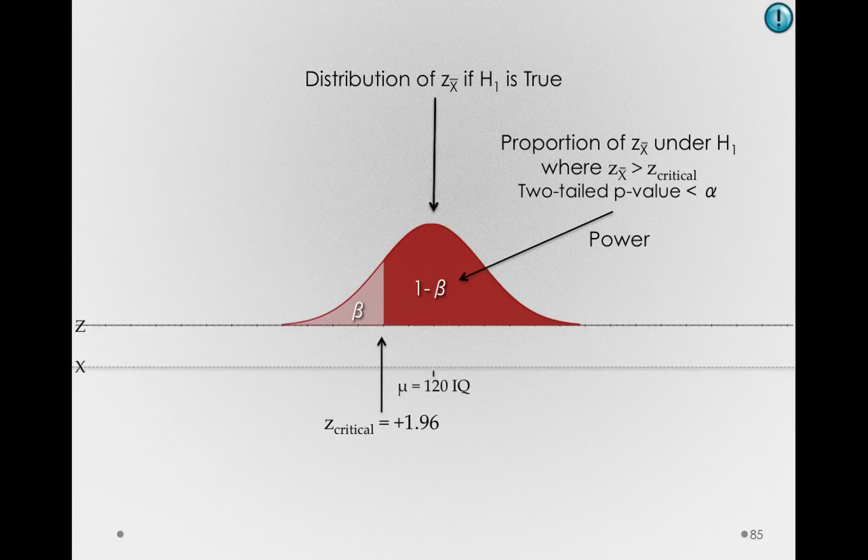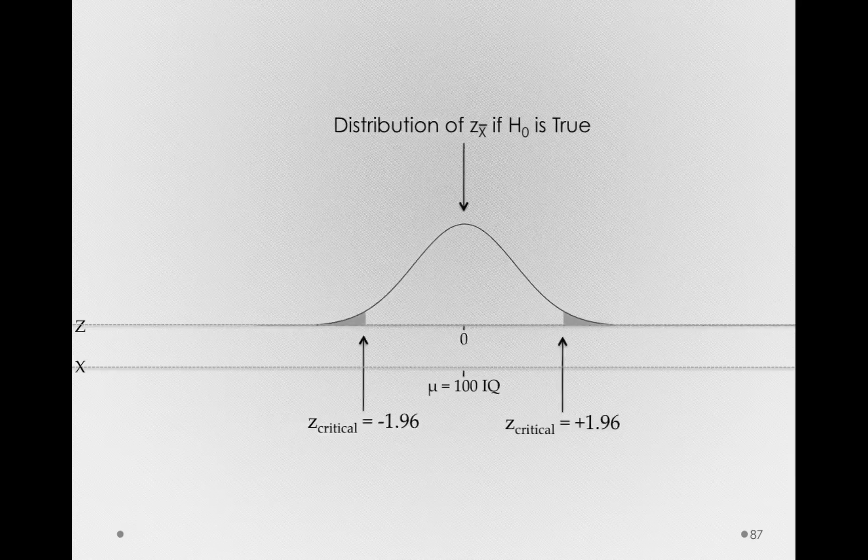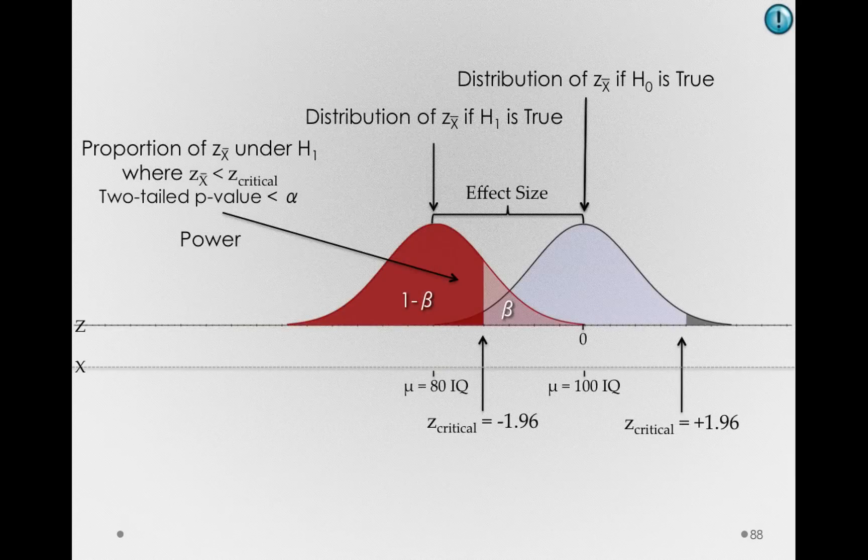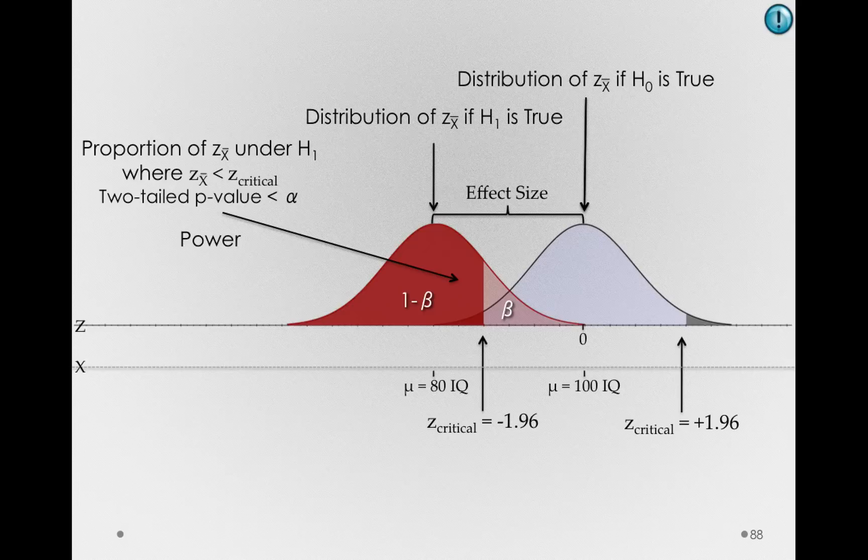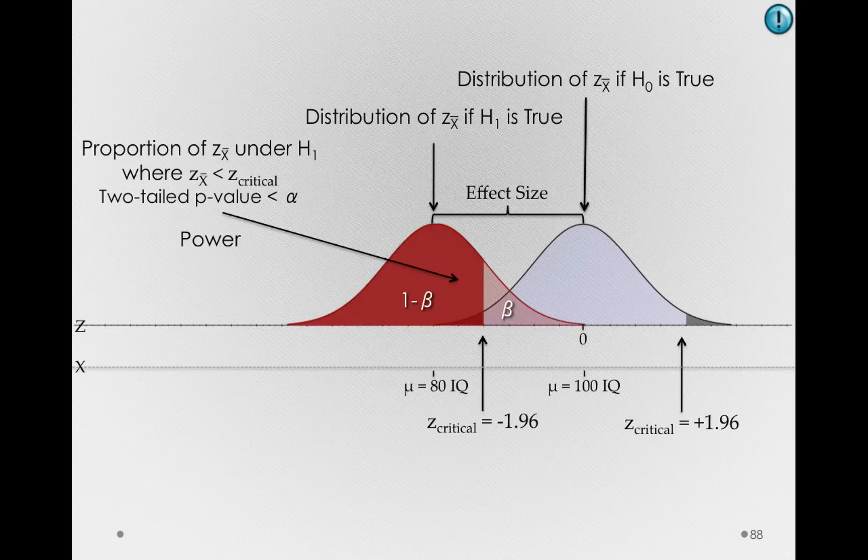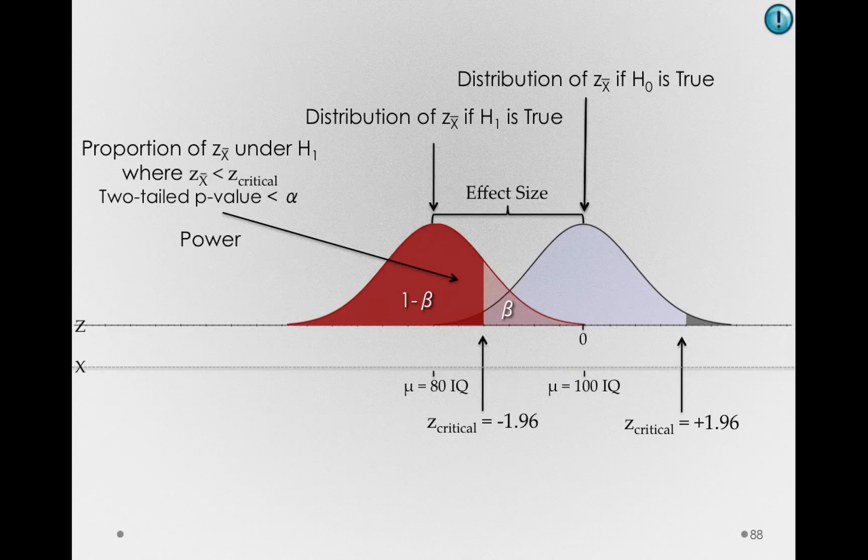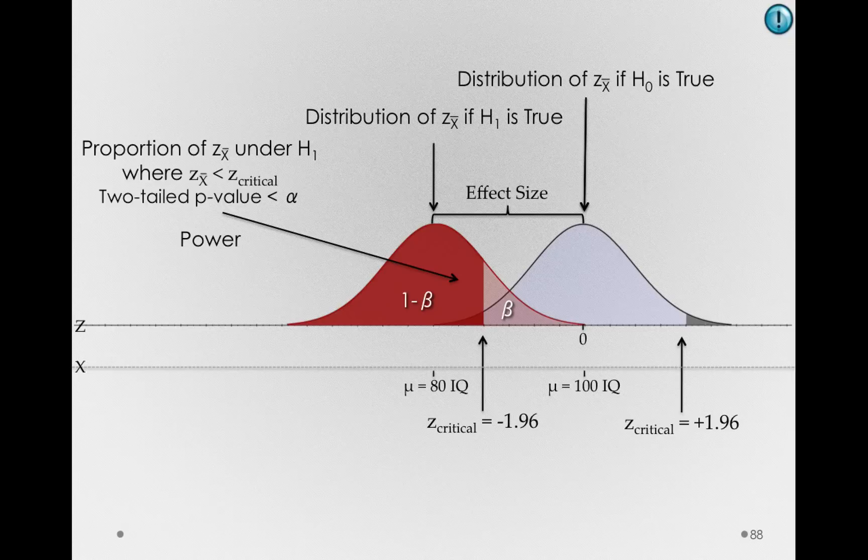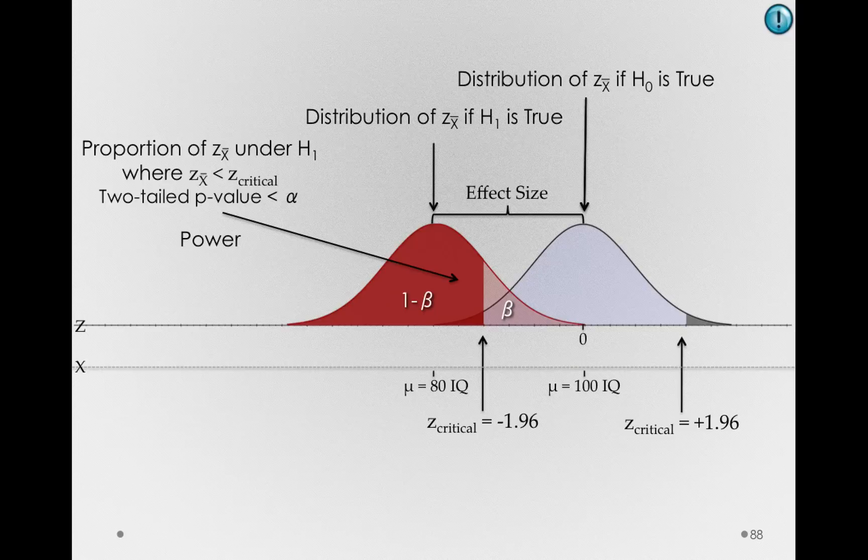Let me put back our other distribution, and let's imagine we didn't increase people's IQ scores, but instead we ended up decreasing IQ scores by the same amount. What if on average we shifted everybody's IQ down 20 points? I want you to see that the situation would be identical. Power now is the region of our sampling distribution under the alternative hypothesis where we had a sample z sub x bar less than negative 1.96. And it's the same amount of power. As long as the effect size is the same, it doesn't matter if we've shifted up or shifted down.